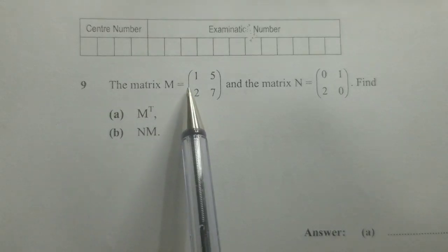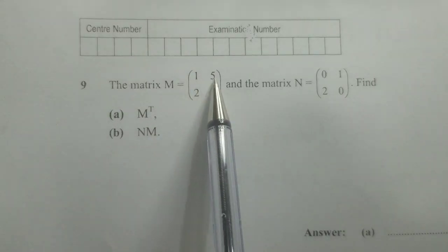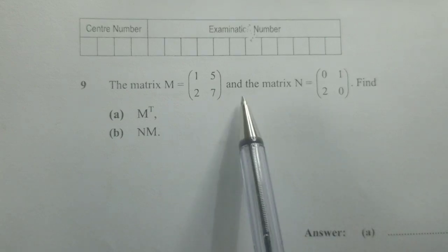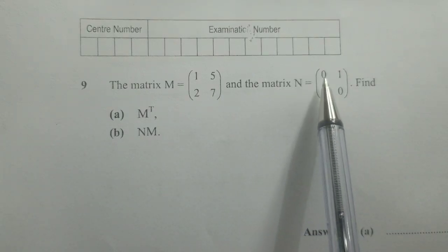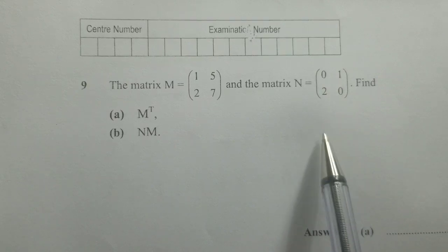The matrix M is equal to 1, 5, 2, 7, and the matrix N is equal to 0, 1, 2, 0.